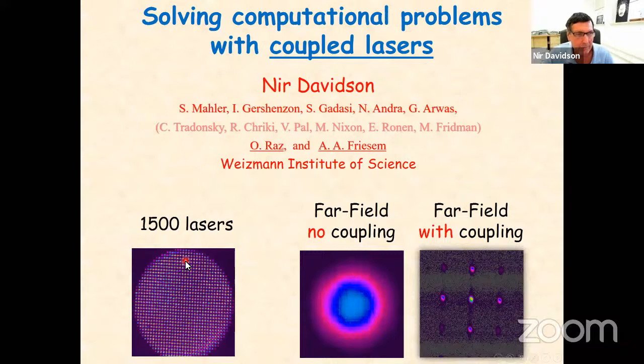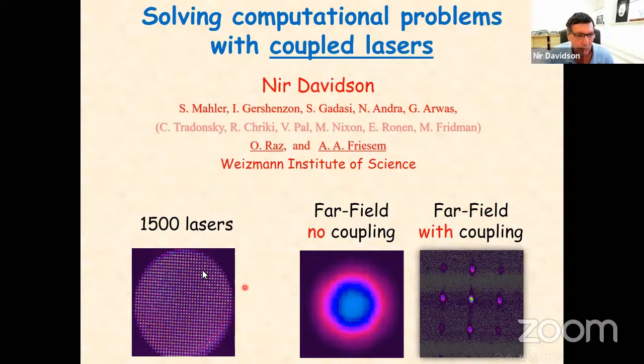Each one of these spots is a laser coming out of the screen toward you. They are arranged on a square lattice. In this middle picture I show you the diffraction — the far-field scattering pattern — when the lasers are uncoupled. When the lasers are uncoupled, each laser has a random phase relative to the others, so in the far field you sum the intensities. Because each laser is small, it has a large diffraction pattern, and you sum 1,500 of those to get this large pattern.